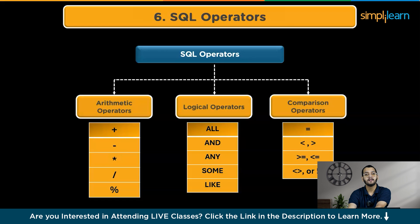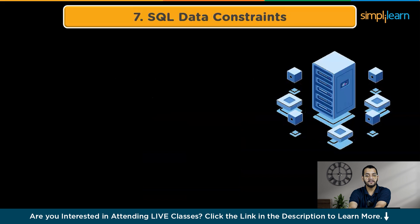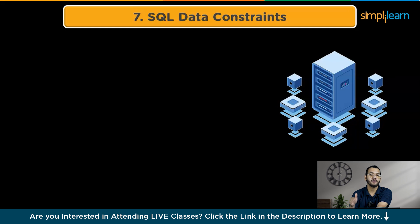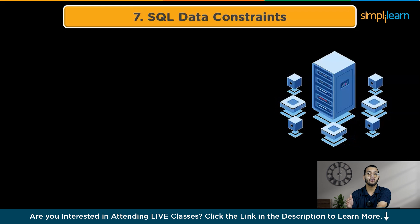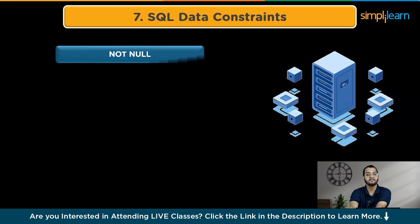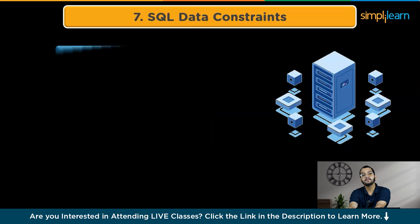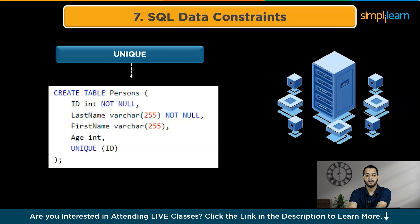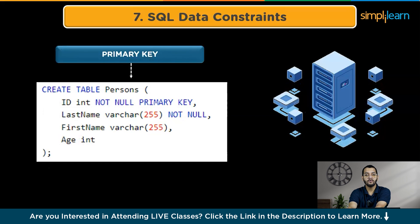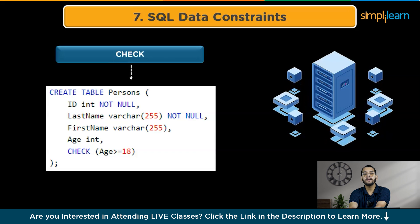After learning SQL operators, the seventh step is to learn about SQL data constraints. Constants, or constraints, are rules that limit the type of data allowed in a table, ensuring accuracy and reliability. If a constraint is violated, the action will be stopped. The most common SQL constraints are: NOT NULL, which ensures a column cannot have a null value; UNIQUE, which ensures all values in a column or group of columns are unique; PRIMARY KEY, which uniquely identifies each row in a table and combines NOT NULL and UNIQUE; and CHECK, which ensures all values in a column meet a specific condition.